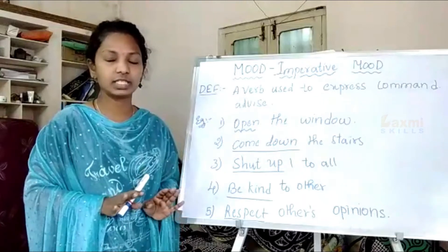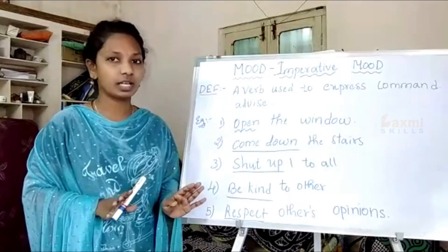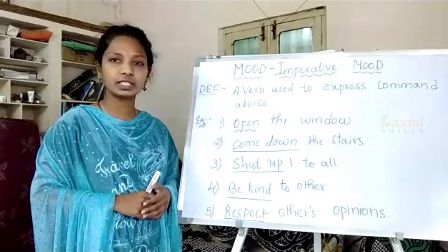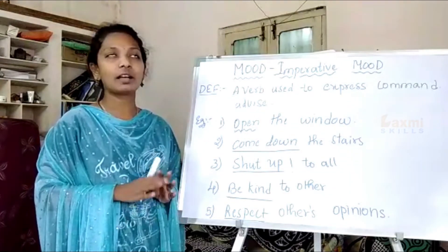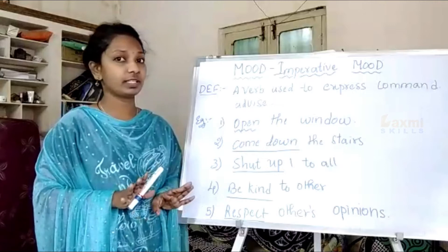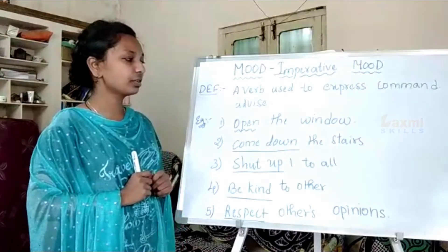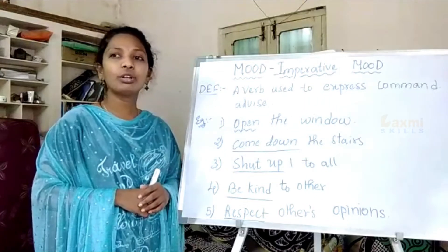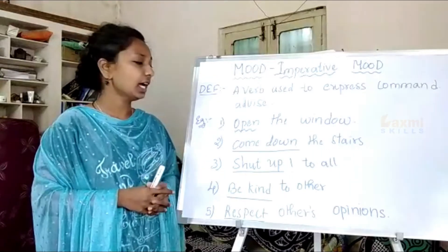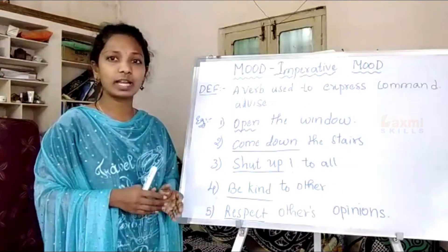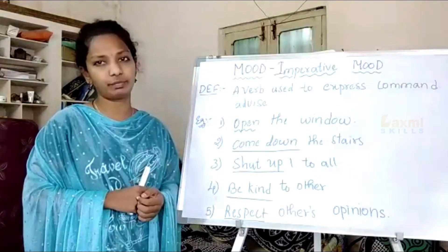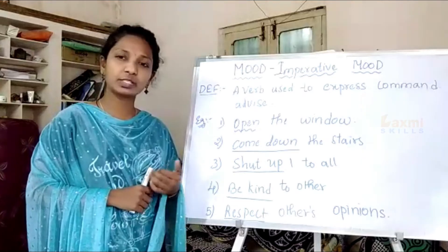Advice is just doing our duty — telling someone what they should do. For example, 'Open the window' — this is our will to have fresh air, and the other person doesn't have any other option except opening the window, so it's a command. Similarly, 'Come down the stairs' is also a command, making them move forward, which benefits both people.